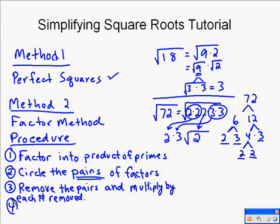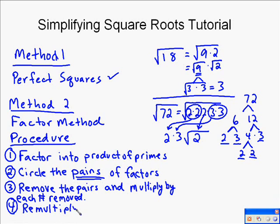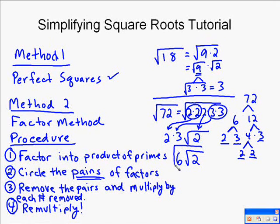The last step is to multiply the numbers out front and write your final answer. We re-multiply 2 times 3 to get 6, because we don't want to leave it in factored form. So the answer is 6 times the square root of 2. Essentially, you're factoring by pulling out pairs, then re-multiplying the numbers out front.